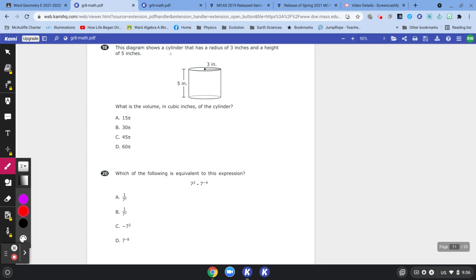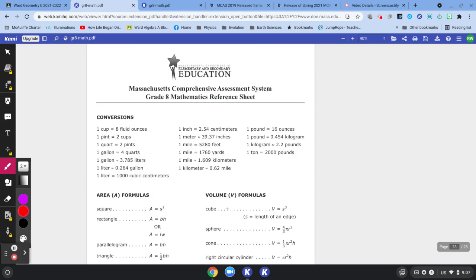Number 18 has a diagram with a cylinder that has a radius of 3 inches and a height of 5 inches. Formula alert! We want to go to the formula page. So there's a formula page.